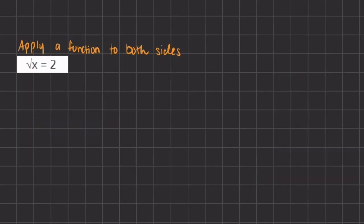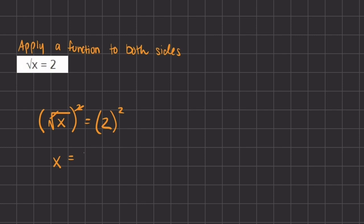In this manipulation method, we want to apply a function to both sides. We have the square root of x equals 2. To find the value of x, we need to apply a function to get rid of the square root — in this case, we square both sides. The square root and the square cancel out, leaving just x on the left. On the right hand side, 2 raised to the power of 2 is 2 times 2, which equals 4. So the value of x is 4, found by applying the square function to both sides.